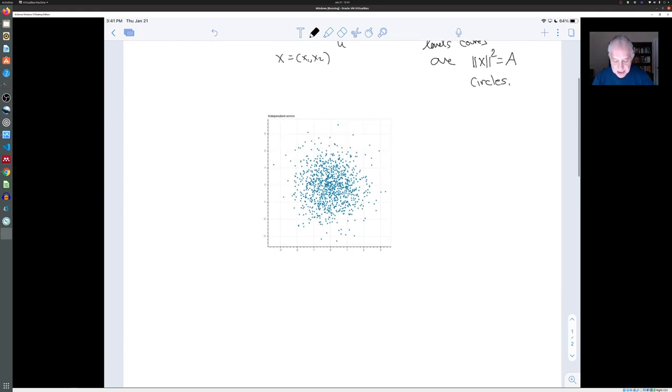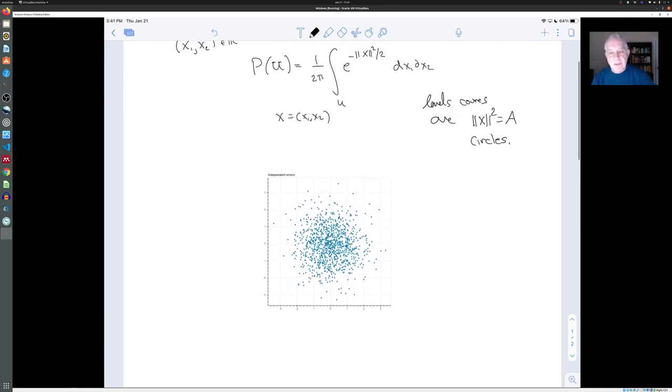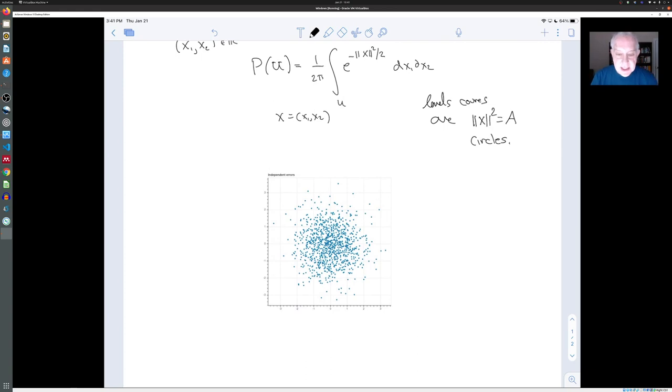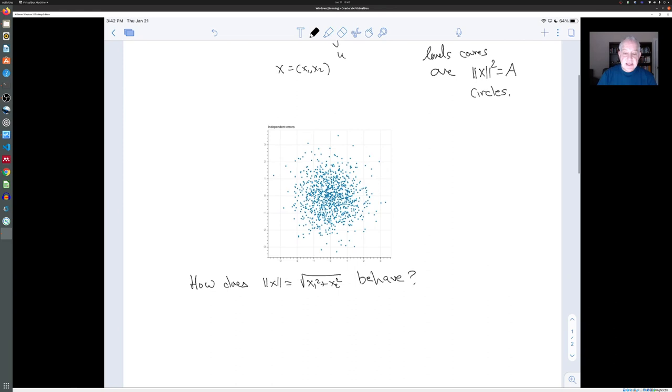Now, if you want to study this situation, it's a little hard to work with the two independent variables. And what you might be interested in knowing about is, what's the absolute value? What's the norm of the error? In other words, how does the norm of X, which is the square root of X1² plus X2² behave?